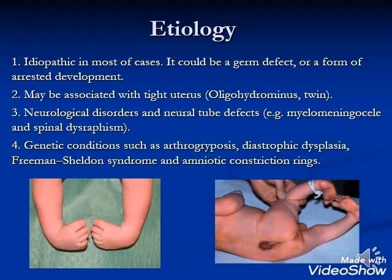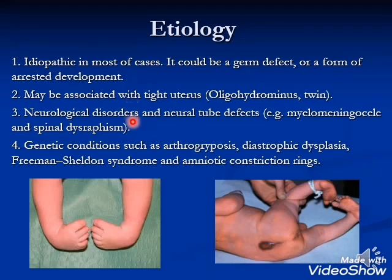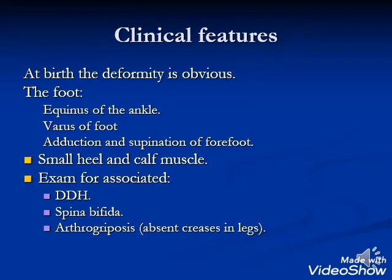Causes: idiopathic in most cases — possibly a germ defect or arrest in development. The condition may be associated with a tight uterus, seen in oligohydramnios or twin pregnancies. Neurological disorders and neural tube defects seen in myelomeningocele and spinal dysraphism. Genetic conditions such as arthrogryposis, dystrophic dysplasia, Freeman-Sheldon syndrome, and amniotic constriction rings may also be causes. Clinical features at birth: the deformity is obvious — the foot is in equinus, varus, and the forefoot is in adduction and supination.